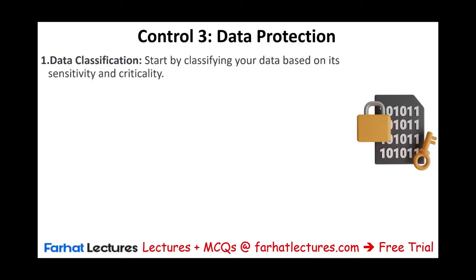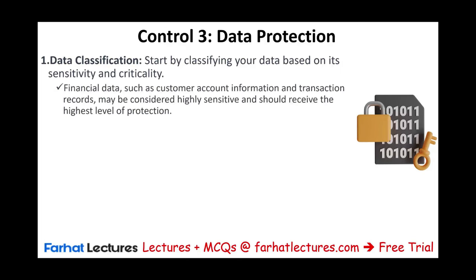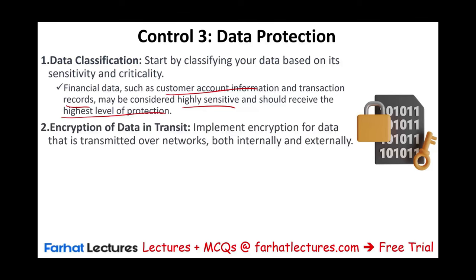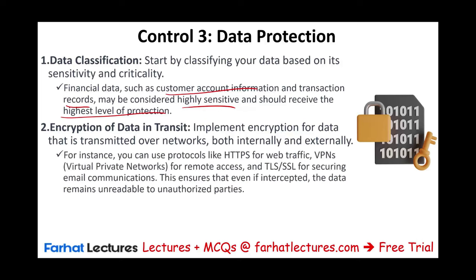One key component is data classification — just as we classify hardware and software, we also classify data based on its sensitivity and criticality. Financial data such as customer account information and transaction records might be considered highly sensitive and should receive the highest level of protection. We should encrypt data in transit so that if it is intercepted, no one can read it. Protocols such as HTTPS for web traffic, VPNs for remote access, and TLS/SSL for securing email communication can be used to ensure intercepted data remains unreadable.